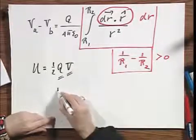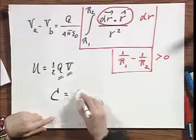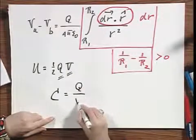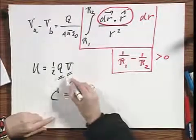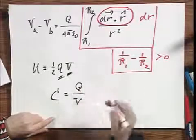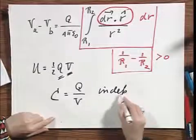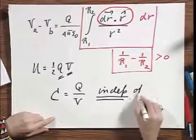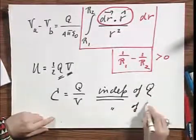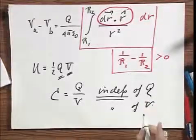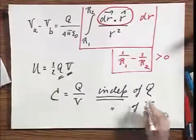If you were interested in what the capacitance is, then you take Q divided by V. We know Q, we just calculated V, and so you can calculate the capacitance. And I want to stress that the capacitance is independent of Q, and it is independent of V. It only depends on geometry.